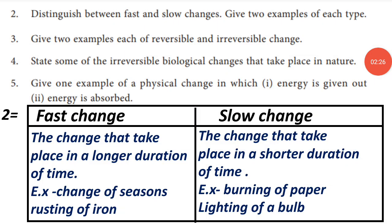Second, distinguish between fast and slow change and give two examples of each. Answer: Fast change — the change that takes place in a shorter duration of time. Slow change — the change that takes place in a longer duration of time. Examples of slow change: change of seasons, rusting of iron. Examples of fast change: burning of paper, lighting of a bulb.